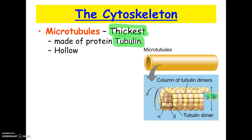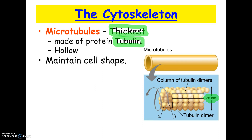You'll see in the picture here they're about 25 nanometers in diameter. You would not be asked that size, but I could ask you which one of the cytoskeletal elements was the largest, and that would be your microtubules. They are hollow tubes, as you can see in the picture.